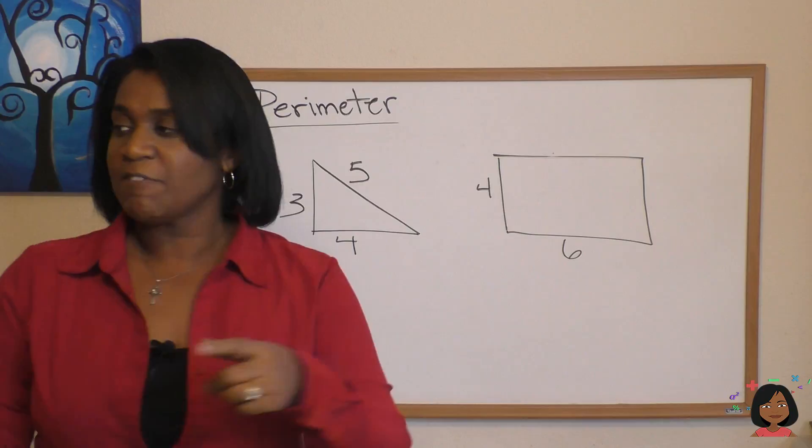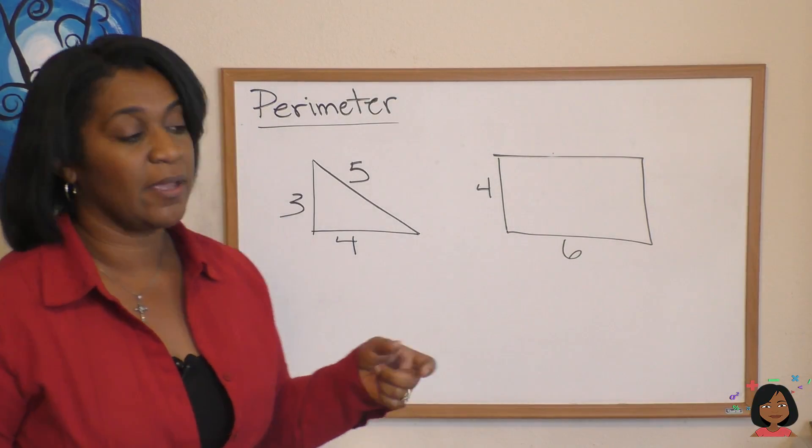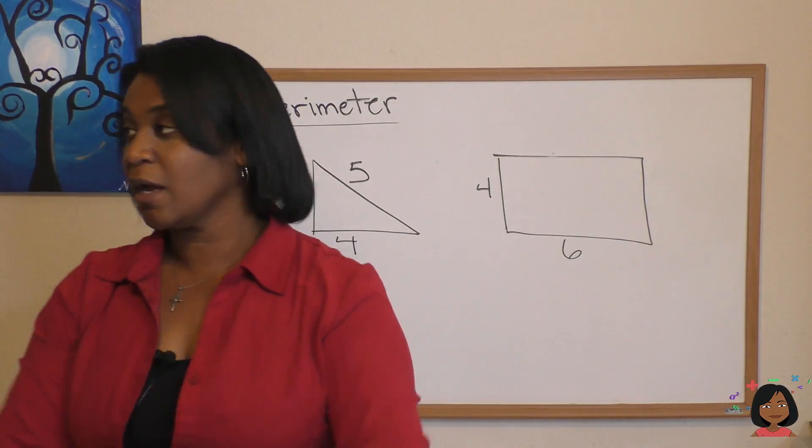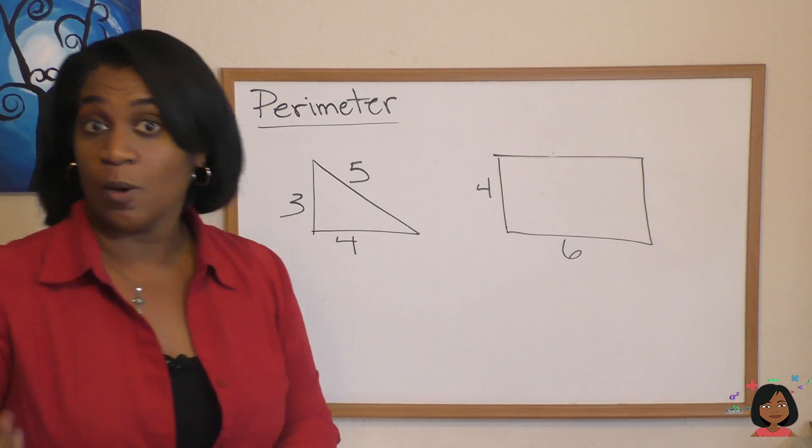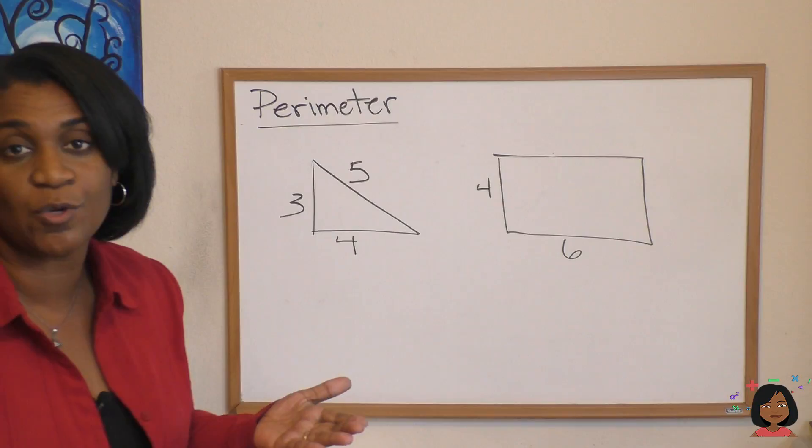So I could say if I wanted to measure the perimeter of the room that I was standing in, I would get my measuring tape out and I'd measure this side and that side, this side and this. Okay, you get the idea.